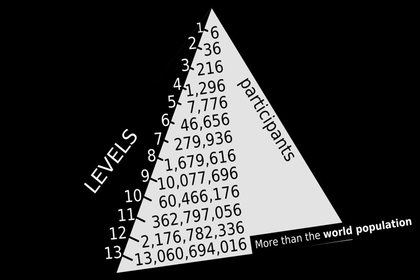In a pyramid scheme, people in the upper layers typically profit while people in the lower layers typically lose money. Since at any given time, most of the members in the scheme are at the bottom, most participants in a pyramid scheme will not make any money.